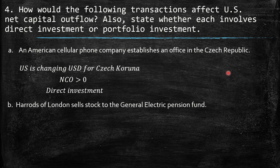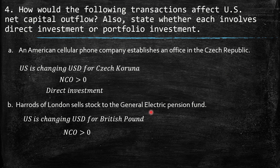B: Harrods of London sells stock to the General Electric Pension Fund. The US changes US dollars for British pounds. We have net capital outflow higher than zero because the GE pension fund is buying stock from London, so it needs British pounds. This is more about portfolio investment because it is associated with financial assets.